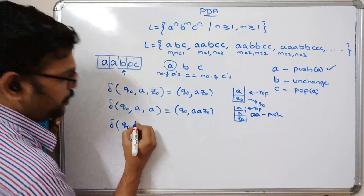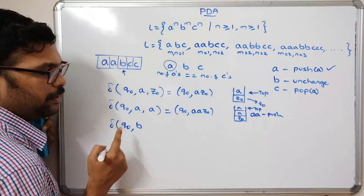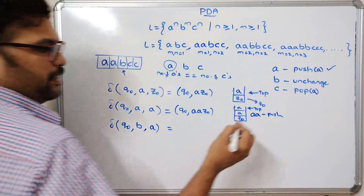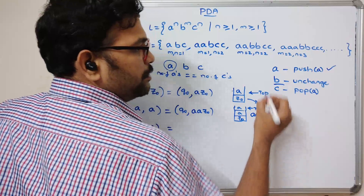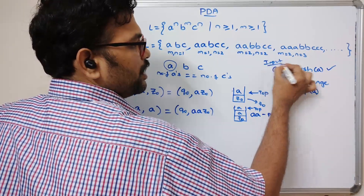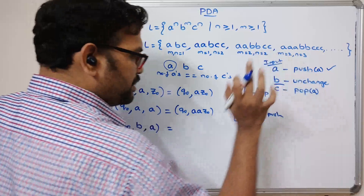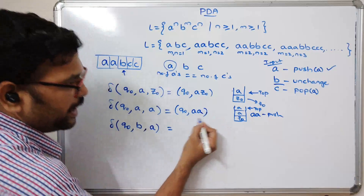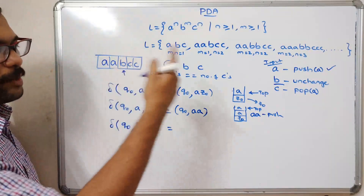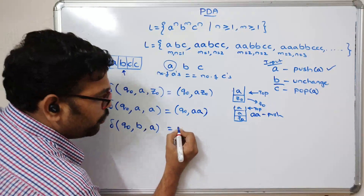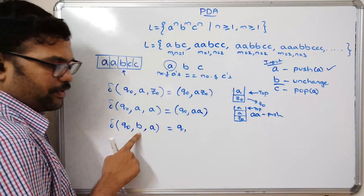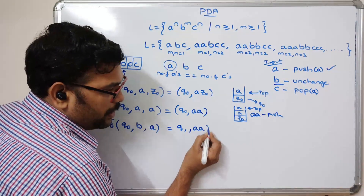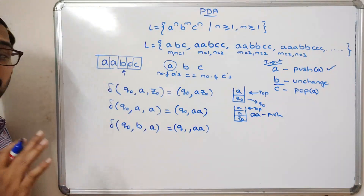Next, delta(q0, b, a): the input is 'b' and the top of the stack is 'a'. As analyzed, whenever the input is 'b', the stack remains unchanged. So the state changes to q1 and the stack symbol stays as 'a' — it remains unchanged.